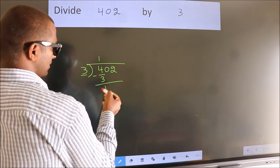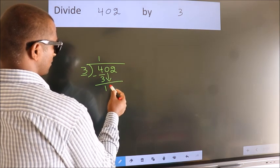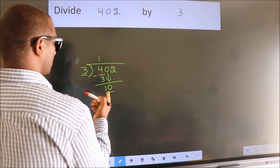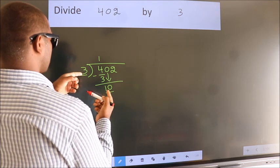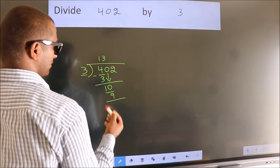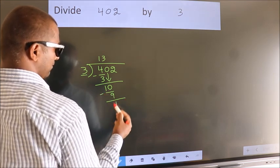After this, bring down the next number. 0 down, so 10. A number close to 10 in the 3 table is 3 times 3 is 9. Now we subtract. We get 1.